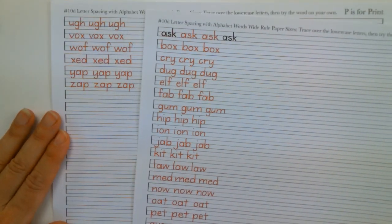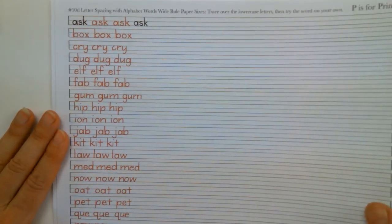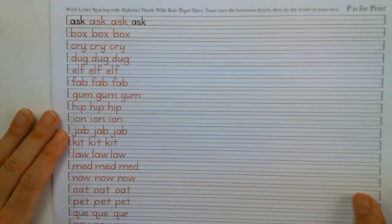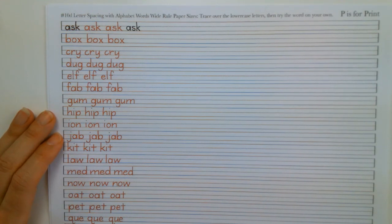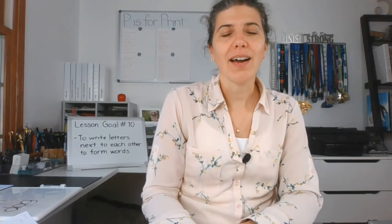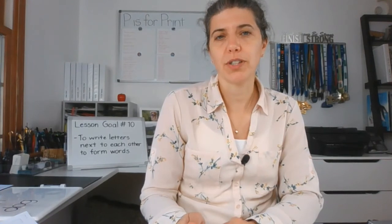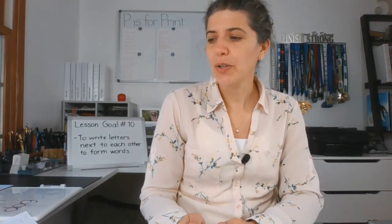And one more page. There is also a blank page that goes along with it. So you can practice writing your own words. And that's always nice to do. Okay, I feel like we accomplished our goal today. Remember, it was all about writing letters next to each other. And that actually forms words. So you can continue to practice.